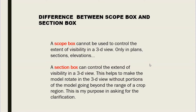Now let's understand the difference between the scope box and the section box, as many users have confusion about when to use each. A scope box cannot be used to directly control the extents of visibility in a 3D view — only in plan, section, and elevation. After drawing in plans, elevations, and sections, you can control it in 3D view. But a section box can directly control the extent of visibility in a 3D view, helping to make the model rotate in 3D without portions of the model going beyond the crop region.